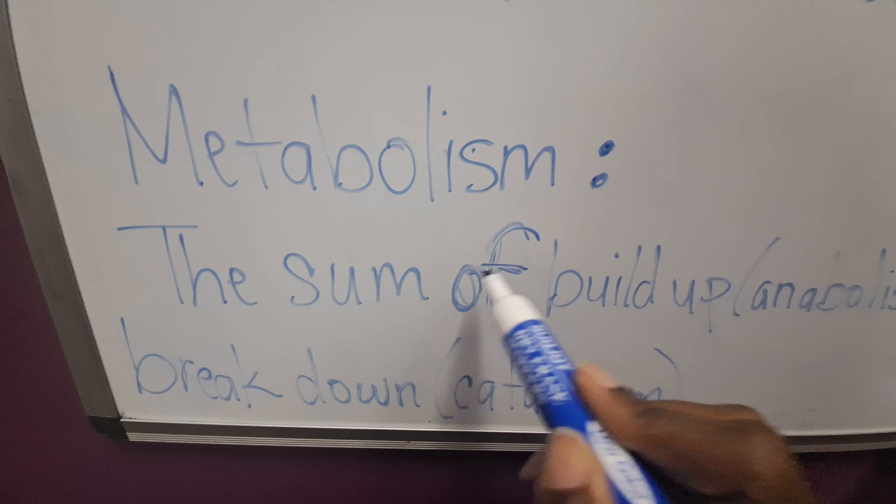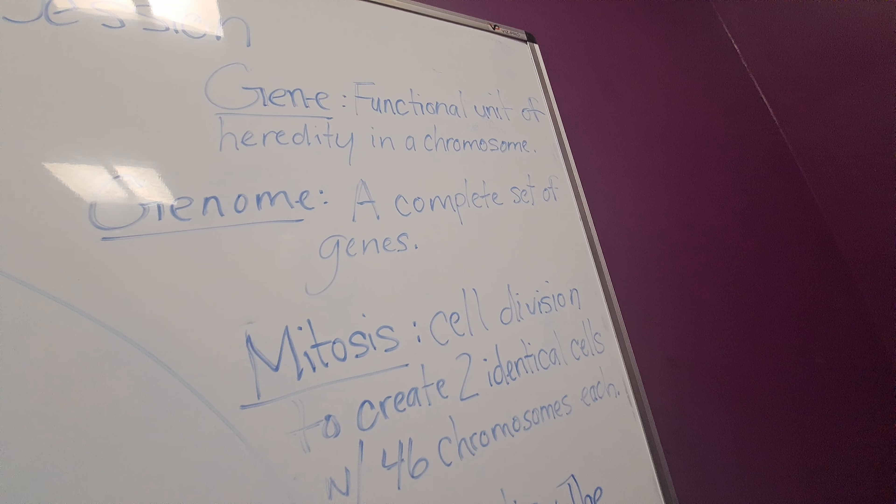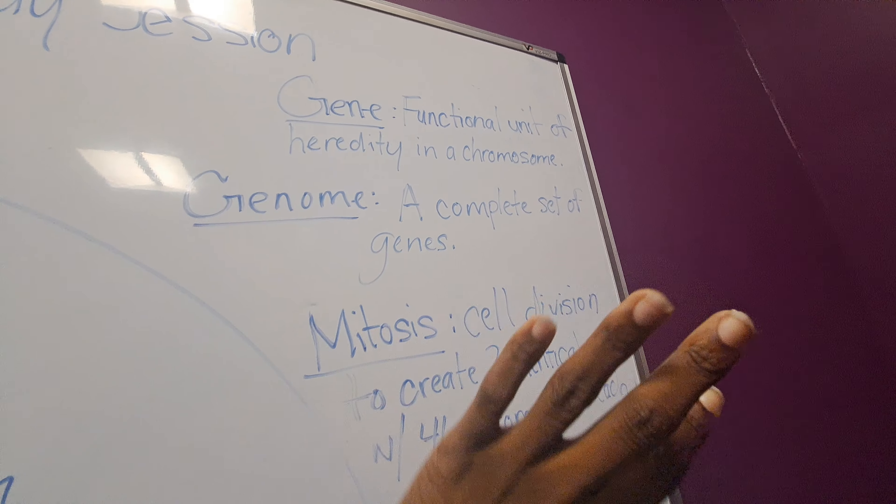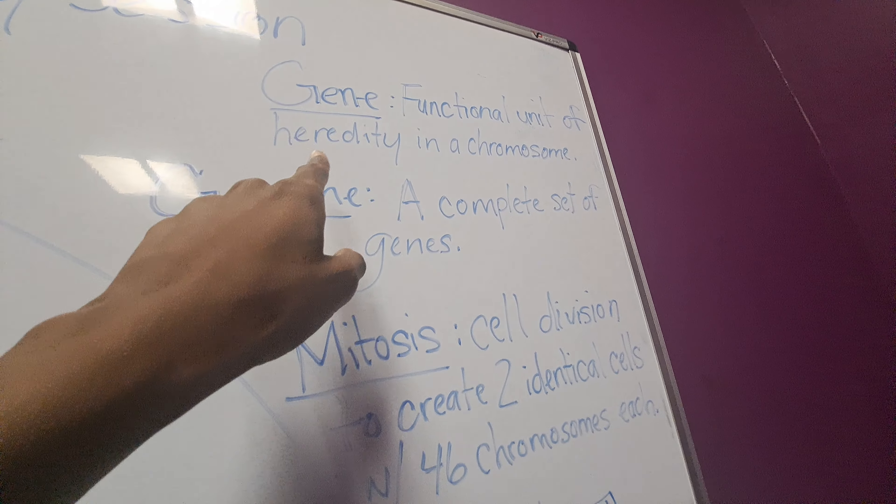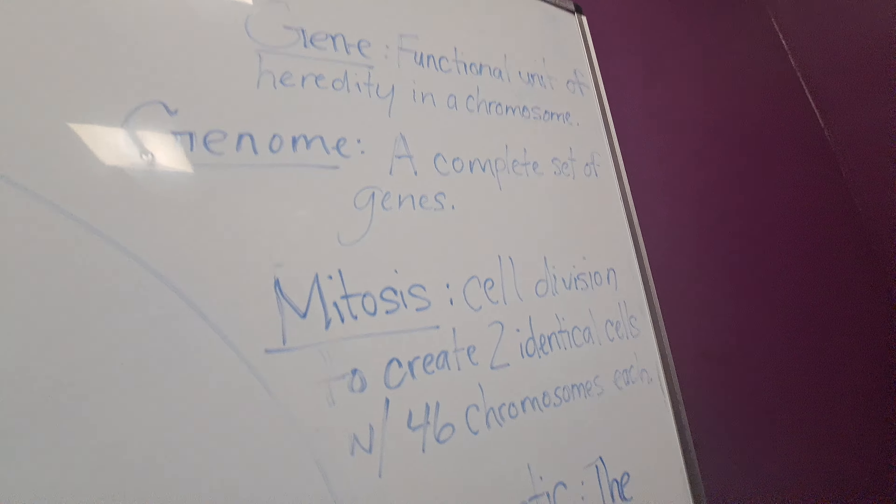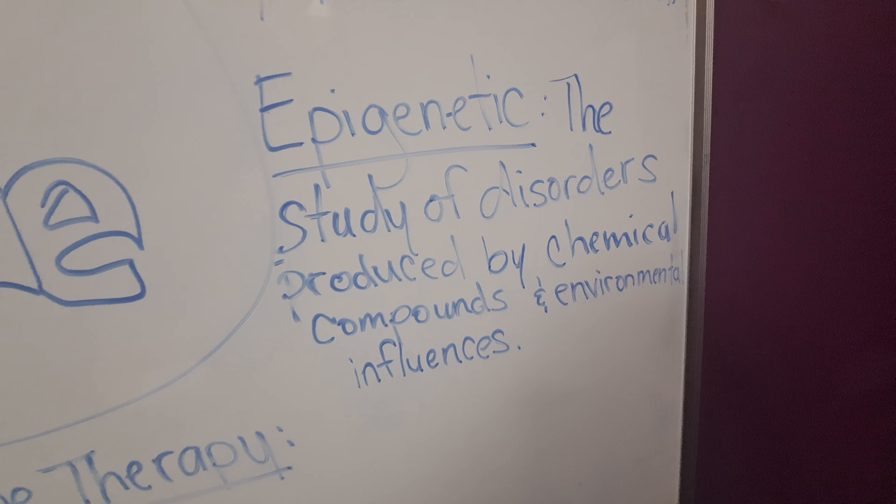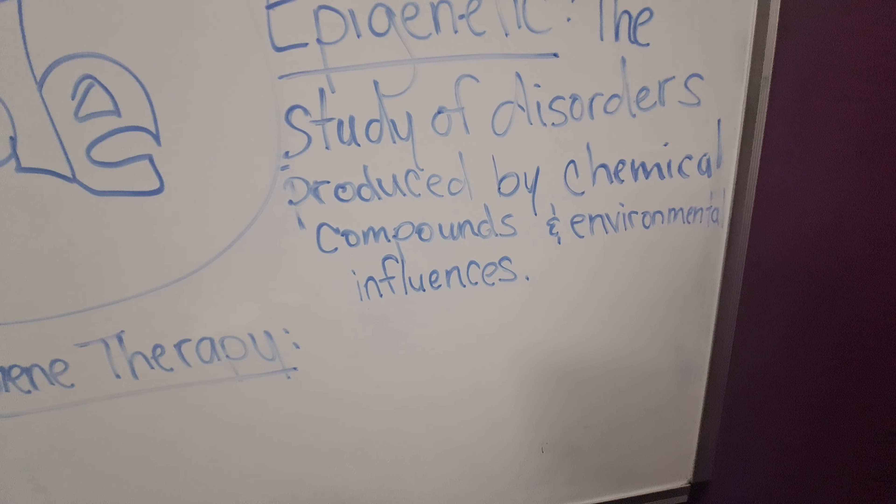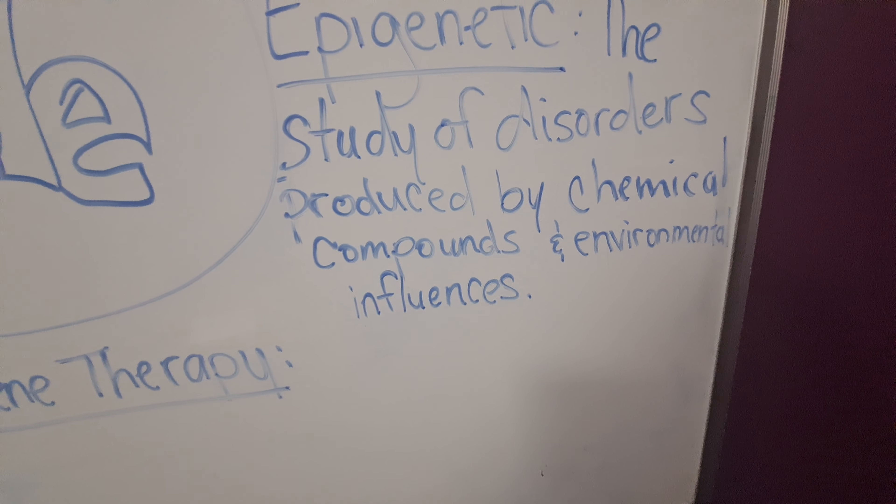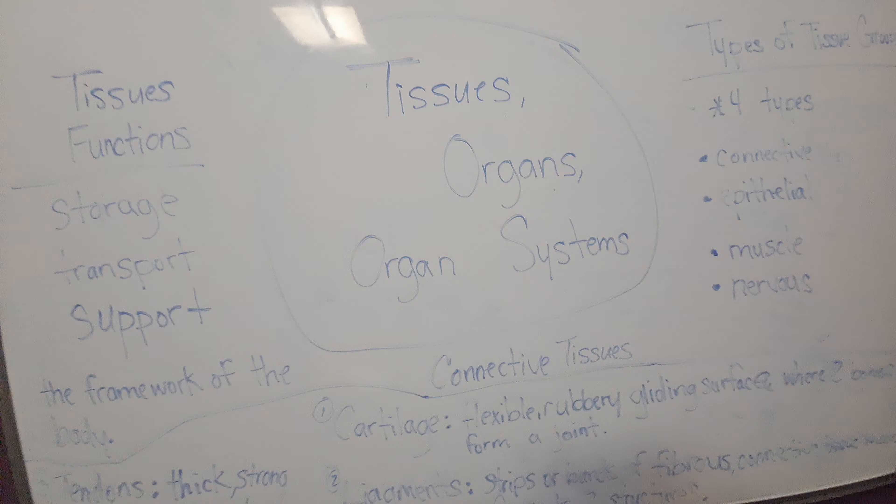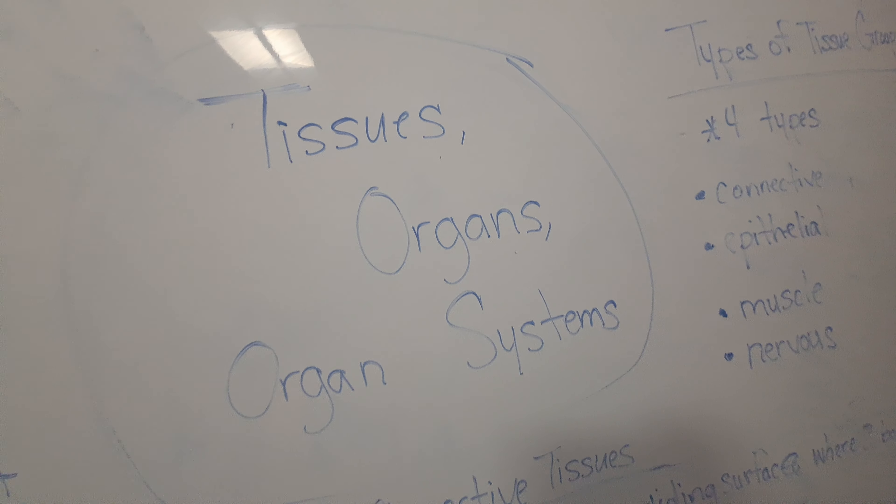Last set of definitions: a gene is the functional unit of heredity in the chromosomes. Genome is the complete set of genes. Mitosis, that's cell division, it creates two identical cells and each of those cells have 46 chromosomes. Epigenetic studies the disorders produced by chemical compounds and environmental influences, whether it's pollution or any other thing.